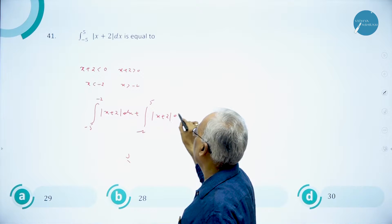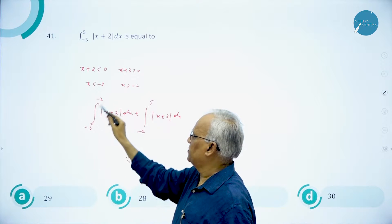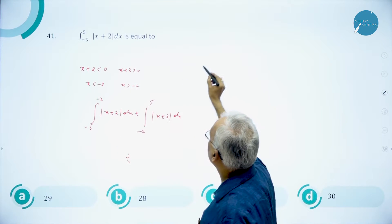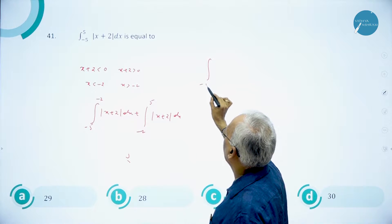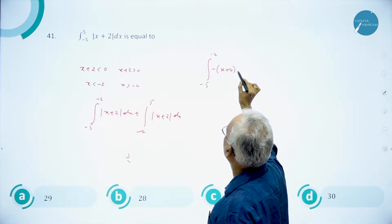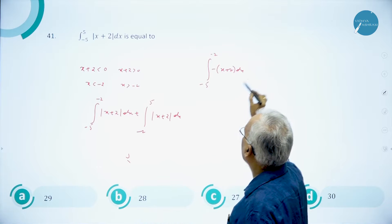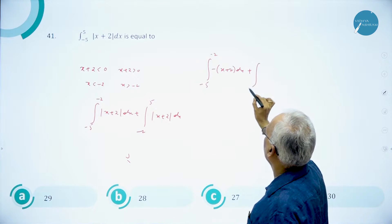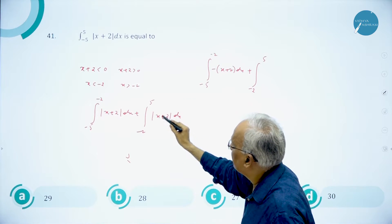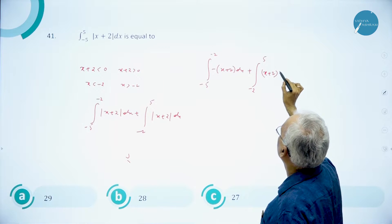Split the integral into two terms. In the interval x < -2, x+2 is negative, so this integral can be written as the integral from -5 to -2 of -(x+2), because in this interval it is negative, so minus of that. Next, plus the integral from -2 to 5. In this interval, x+2 is positive, so write x+2 as it is.